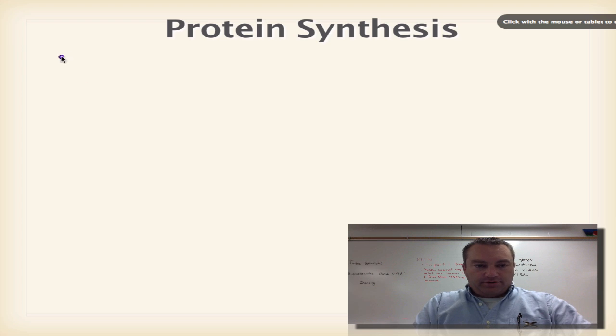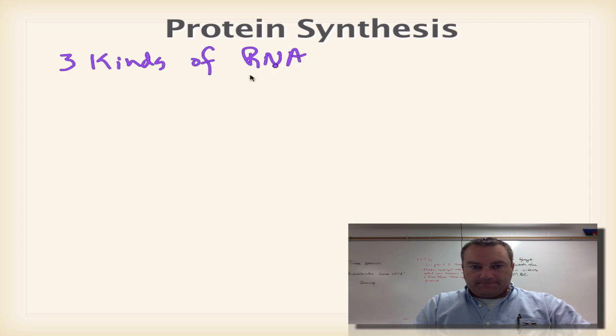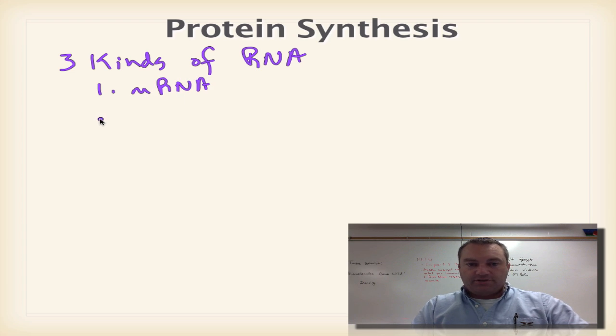Basically what we've learned so far in chapter 13 is there's three kinds of RNA. This would be mRNA which is messenger RNA which delivers information from the nucleus out into the ribosome in the cytoplasm. We have rRNA which is going to be part of the ribosome, and then we have tRNA which is the transfer RNA.